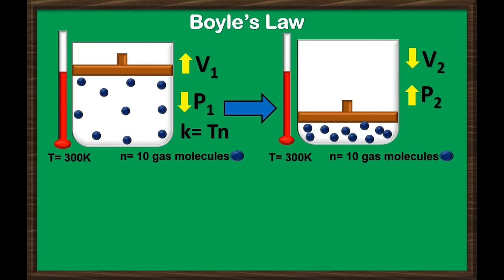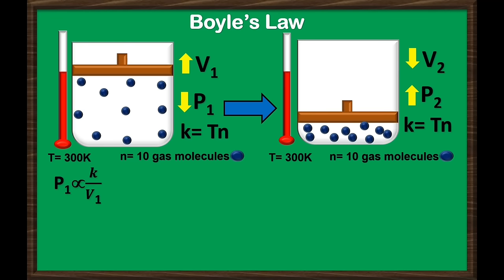We can consider this change as the final volume and pressure of the gas. The observations can be expressed using the following formula. The initial pressure is inversely proportional to the initial volume, or the product of initial pressure and initial volume is equal to K constant — which represents the constant temperature and fixed amount of gas. For the final observation, the final pressure is inversely proportional to the final volume.